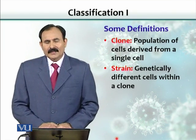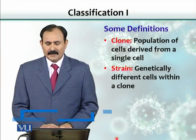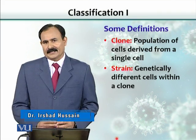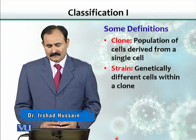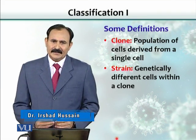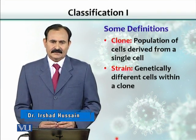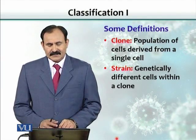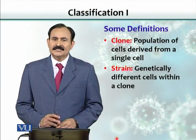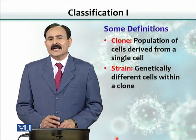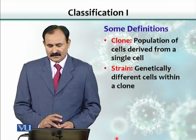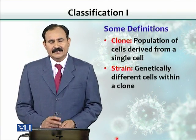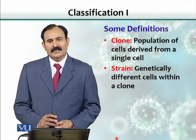A clone is basically a population of cells derived from a single cell. During replications, microorganisms sometimes genetically acquire different characters that differ from their parents, and these are called strains.